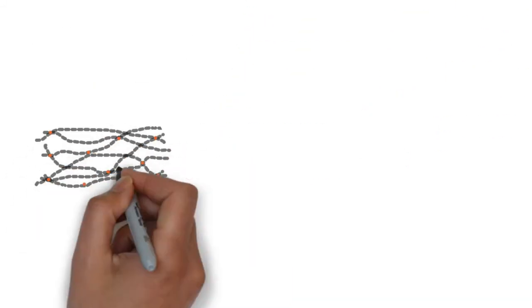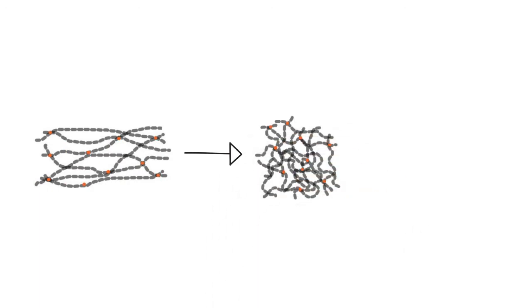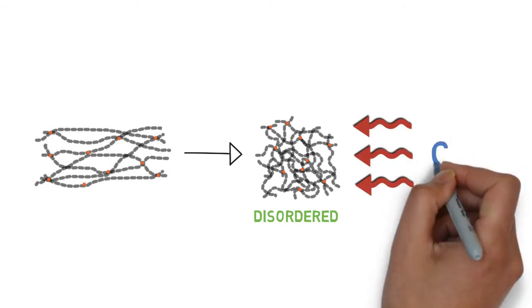When you let go of the rubber band, the polymer molecules break out of those crystals. Whenever molecules break out of crystals, they absorb heat. That's why the rubber band feels cold when you let go of it.